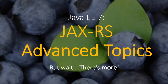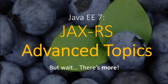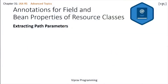Hello everybody and welcome to your 31st chapter in your Java EE 7 tutorial series. This will be the last tutorial in your web services part. We will be talking about JAX-RS and its advanced topics. In chapter 29, we talked about the basics of Java API for RESTful web services, an API designed to make the processing of creating RESTful web services easy and faster. This chapter describes advanced features of JAX-RS.